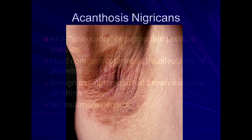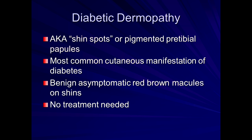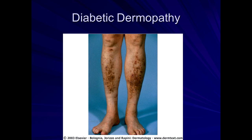Shin spots — diabetic dermopathy — is actually among the most common cutaneous manifestations of diabetes. Patients have benign asymptomatic flat macules on the shins with no real treatment needed. The patient comes in with these pigmented flat, non-palpable lesions that aren't going away, concerned about the discoloration. This is often related to underlying diabetes — also similar to stasis dermatitis, where you get deposition of hemosiderin containing iron, imparting that iron-like dark hue due to capillary leakage from poor circulation.